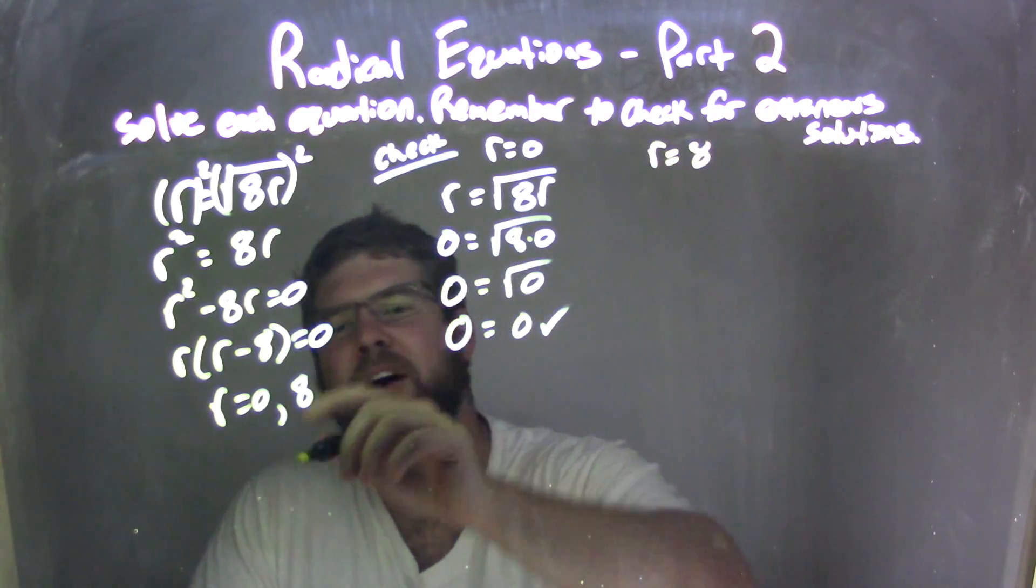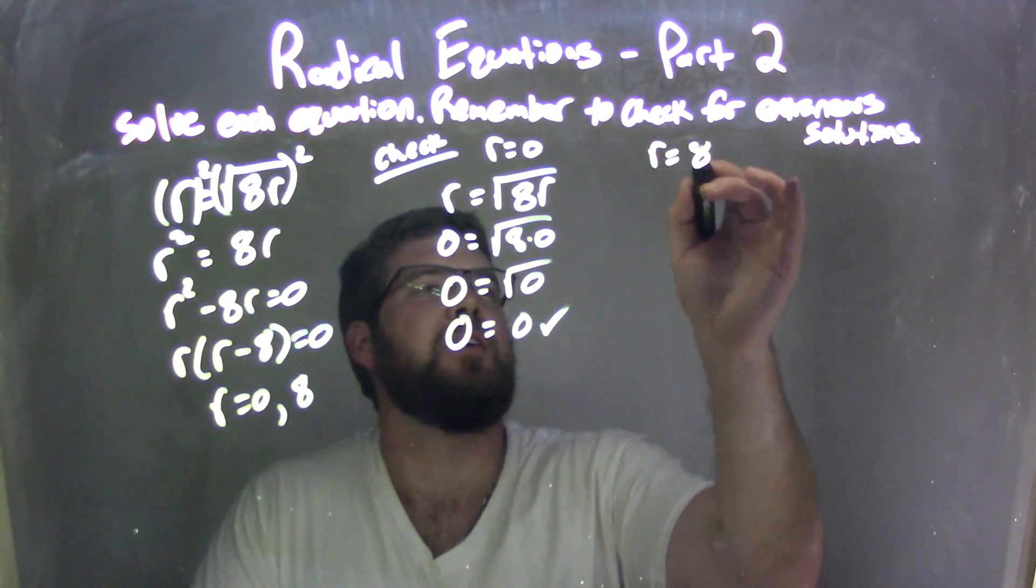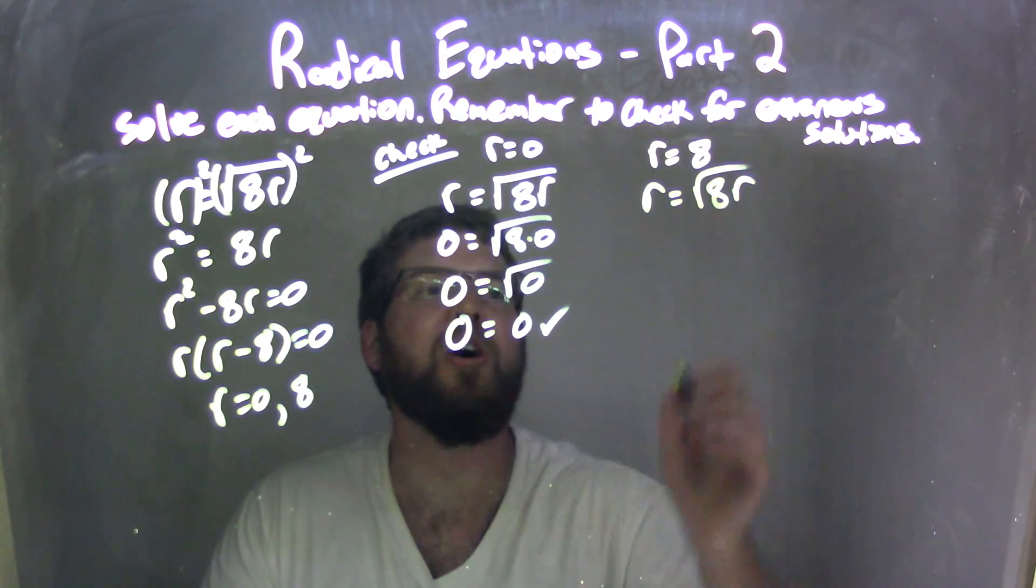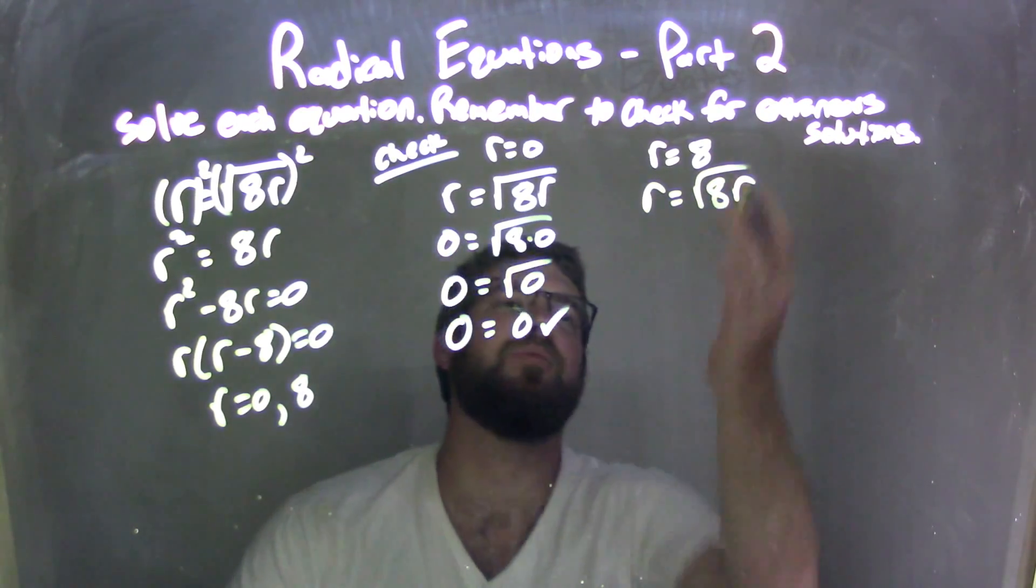So I have r equals 8 as the other one. I got to check that too. So we have r equals 8. Let's rewrite the equation: r equals square root of 8r. Let's plug 8 in.